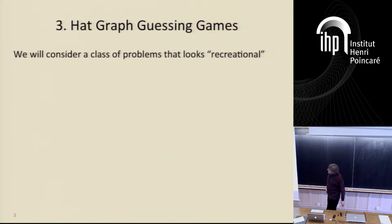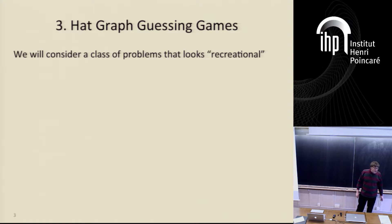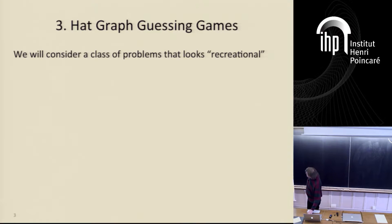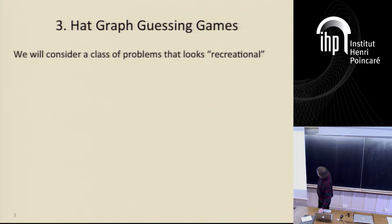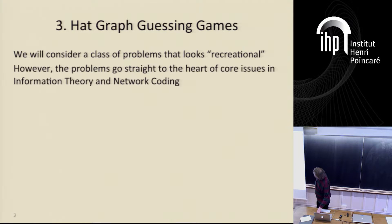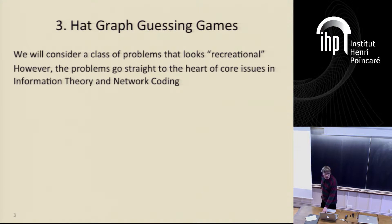I'll start with a class of problems that really looks very recreational — the kind of things you find in newspaper columns. It's a kind of hat guessing game, but when you say hat guessing games, people often confuse it with other hat guessing games that are quite different in nature. It turns out that this recreational problem goes straight to important issues in information theory and network coding.